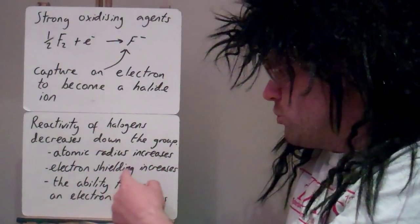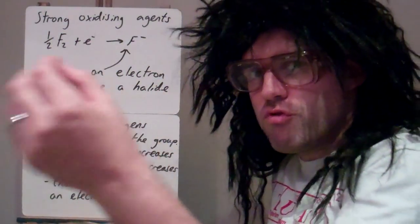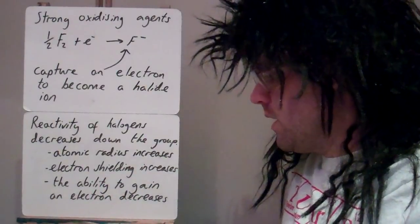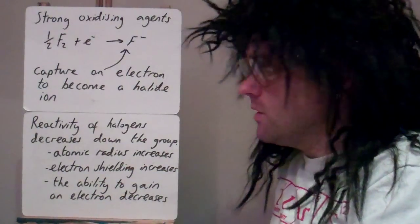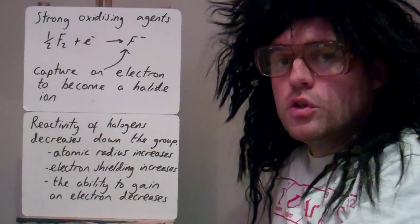We've also got more electron shielding, so as we get more shells, there's more shielding. So the ability to gain an electron, to attract an electron towards the nucleus, decreases as you go down the group. So they become less powerful oxidising agents as you go down the group.